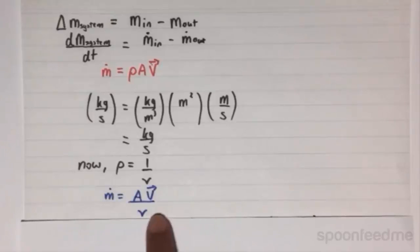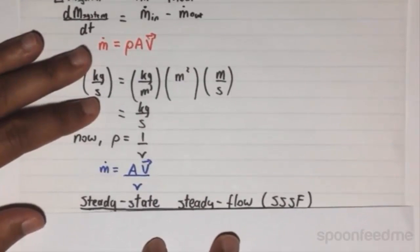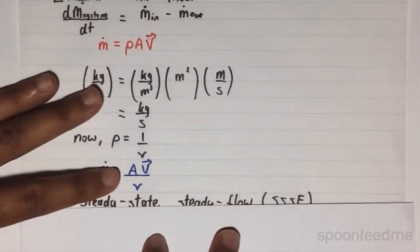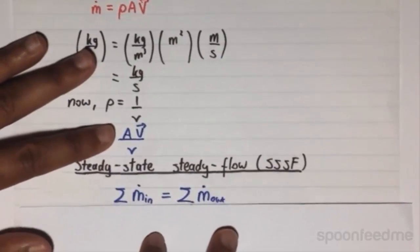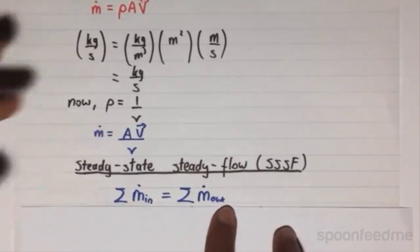Be careful, as one v denotes the volume, and the other denotes the velocity. An easy way to differentiate the two is to draw a vector arrow on top of the velocities. In this course, we will only be dealing with steady state steady flow situations. This means that when mass flows into the system at a steady rate, it will flow out of the system at that same rate. Therefore, the total mass flow rate into the system equals the total mass flow rate out of the system.